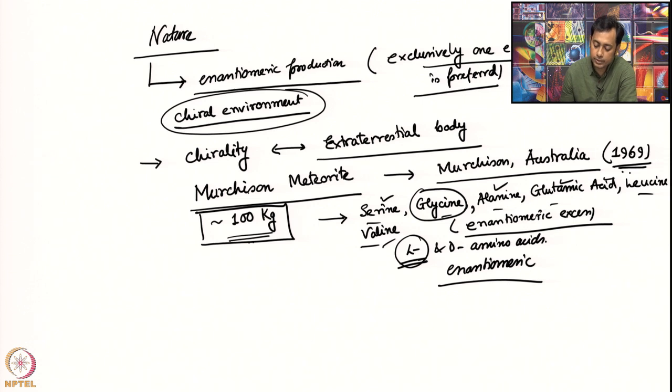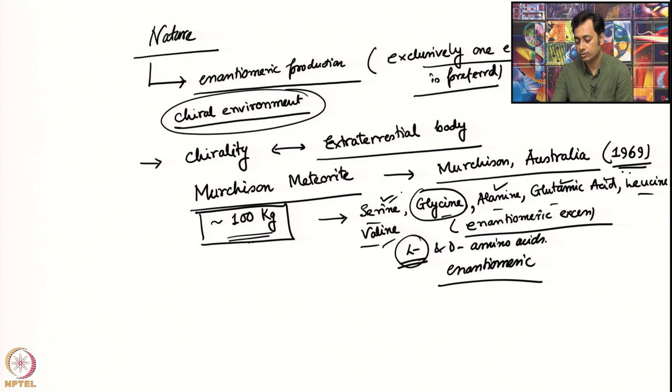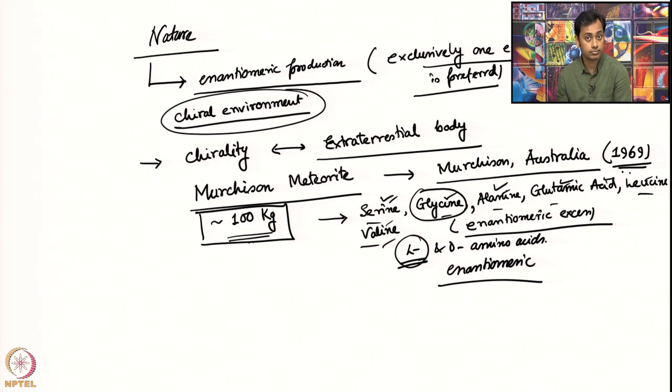Very interestingly, when we look into the Murchison meteorite in further detail, we find that the amino acids already known on earth are present, but additionally there are some other amino acids not found on Earth. Let us take a look at what those other amino acids are.